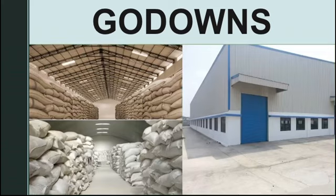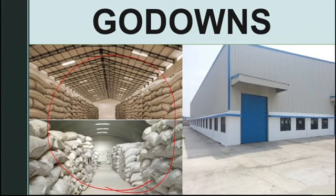From these godowns, food is transported to main markets. From the main market it reaches the local market. We buy food from the local market for our use.